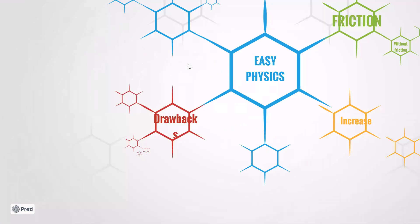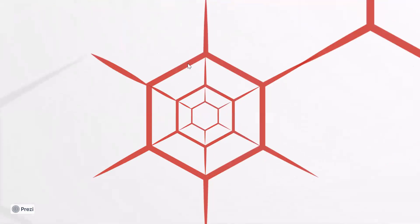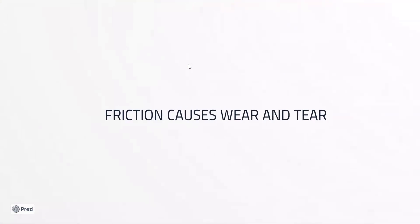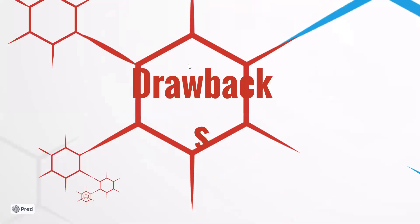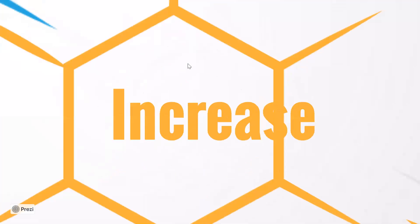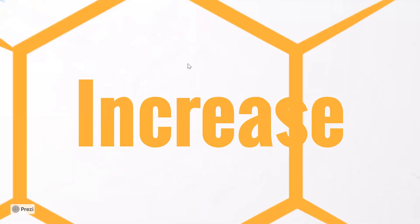Now, what are the drawbacks of friction? Friction causes wear and tear. As we use our shoes for a long time, the soles of the shoes will wear out, and the tires of vehicles will wear out due to continuous friction. The mechanical moving parts of machinery will also wear out due to friction and continuous usage. So all these are the drawbacks of friction.